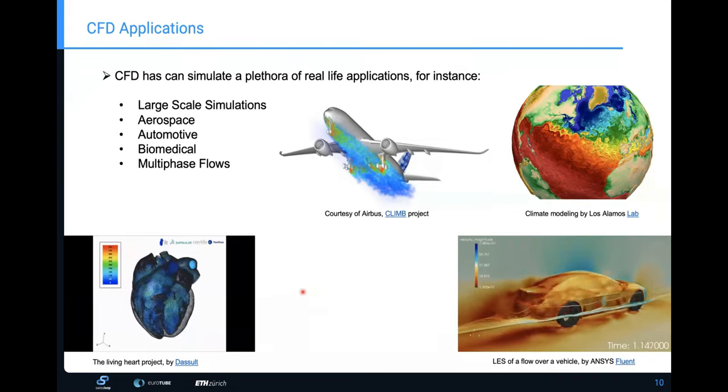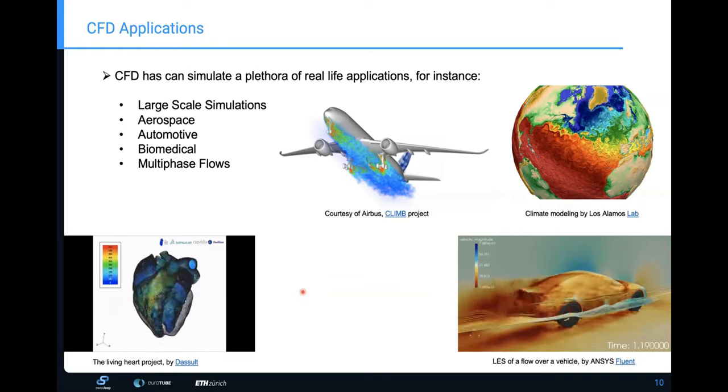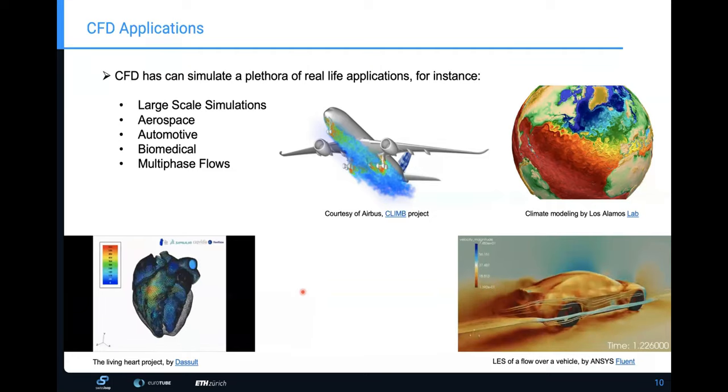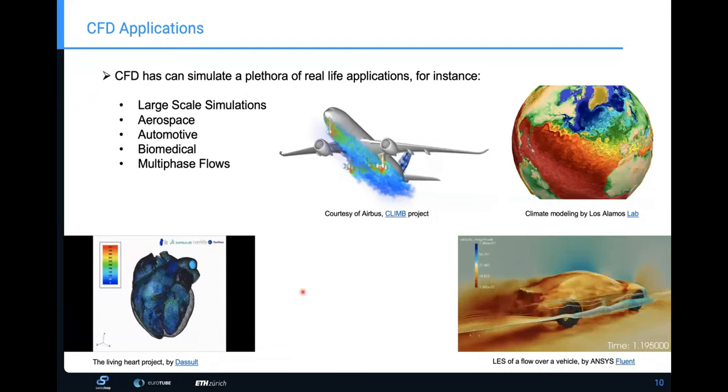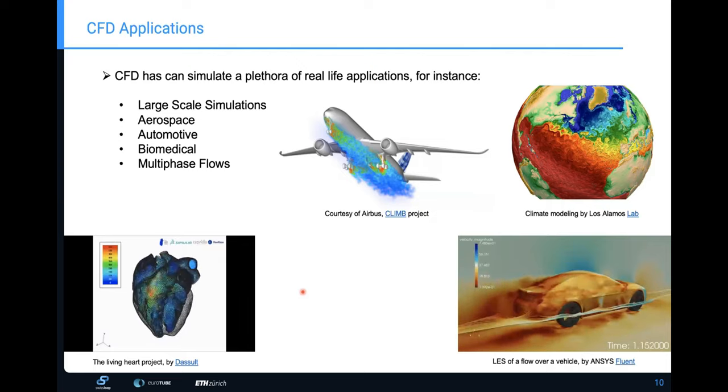It's not only those engineering approaches, but also biomedical approaches, as you can see, this is the living heart project by the Dassault company. And this was representing a blood circulation in the heart of the human body. This biomedical applications, there are many, many more applications also, but I'm just mentioning a few of them here, what came in hand.